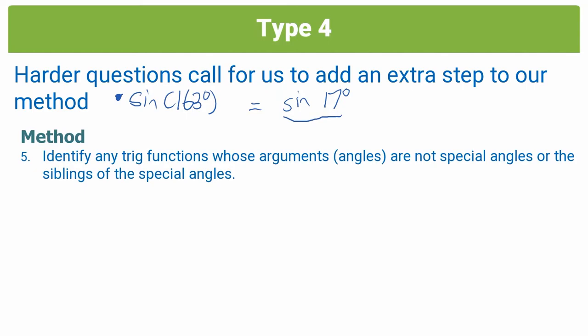Step 5: identify trig functions whose arguments — the angle in the bracket — aren't special angles or siblings of special angles. The special angle siblings to know are: 150, 210, 330, 390, 120, 240, 300, 420, 135, 225, 315, and 405. If an angle isn't one of these, you won't know its value without a calculator. Step 6: use reduction formula to make the arguments of the trig functions equal, so that they cancel.